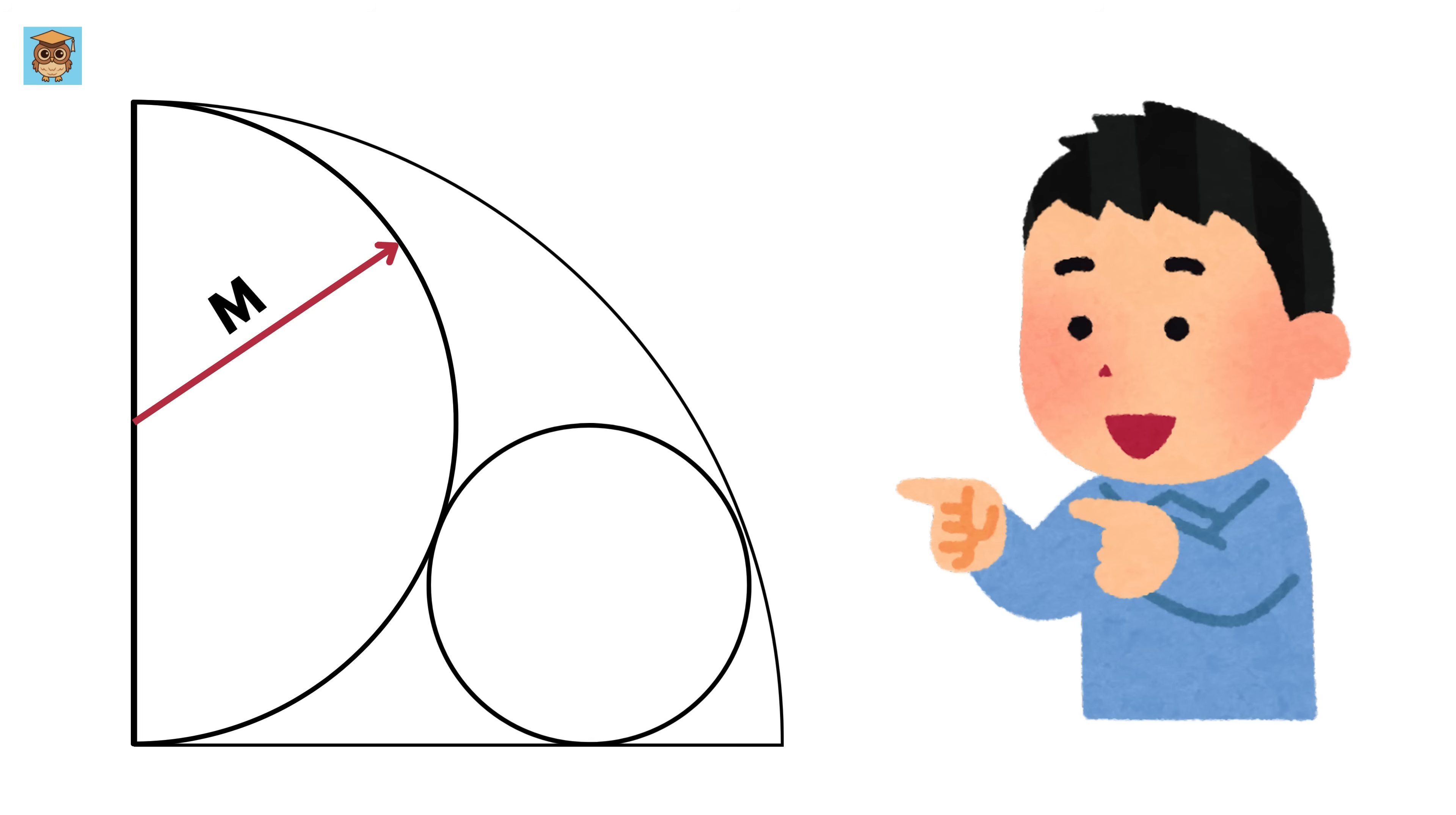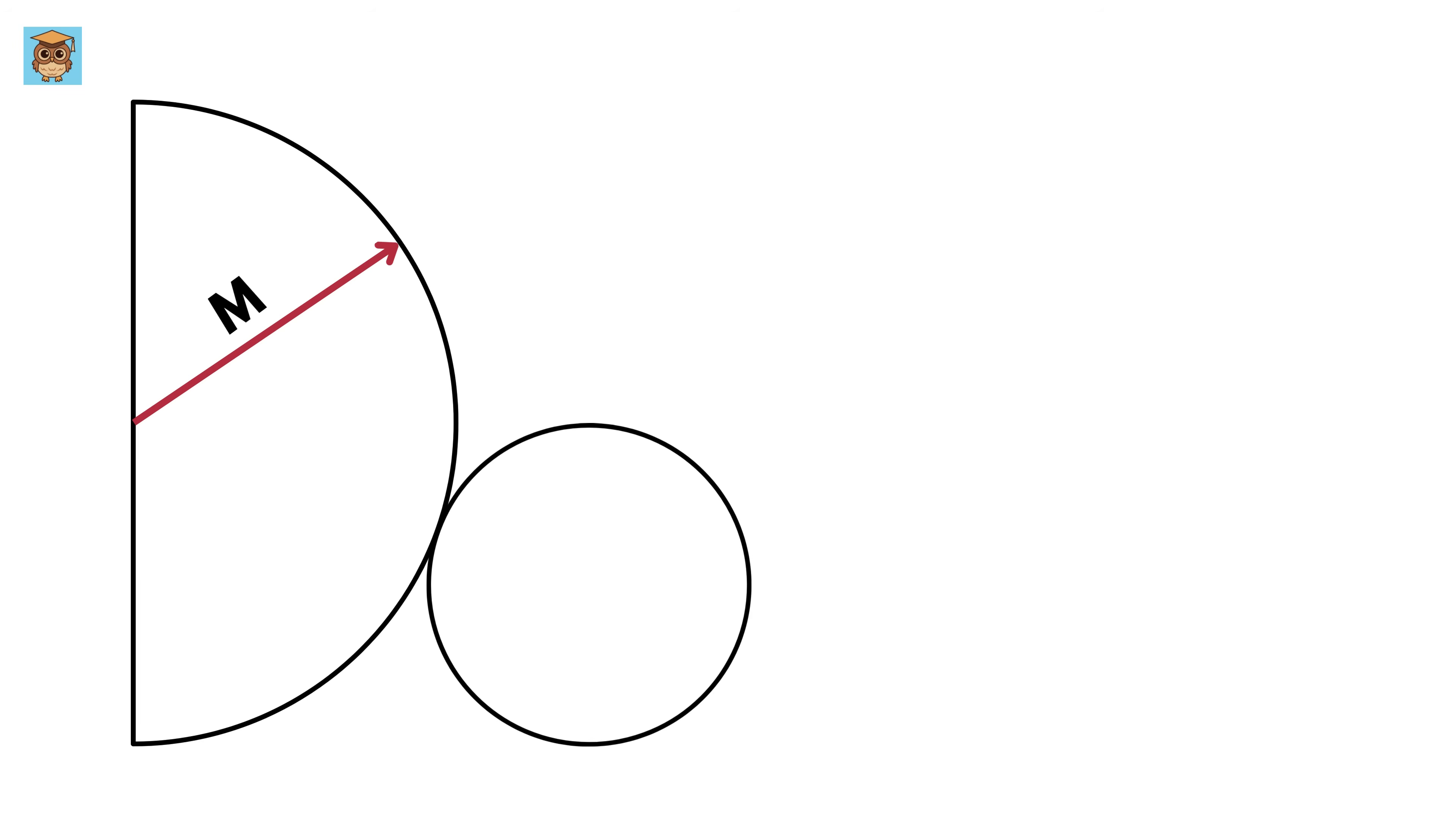Now consider this semicircle and this circle. Connect their centers so it will pass through this point of contact, right? Now this piece is the same as the radius of this semicircle which is m, and this is the radius of this circle which is r, so this whole length will be m plus r.